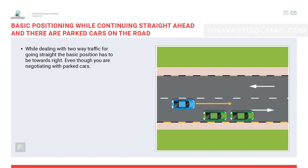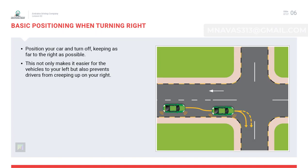Basic positioning when there are parked cars on the road: if there are parked cars on the right side, check the mirrors and blind spots, turn on the left indicator, and overtake if there are no oncoming vehicles. Once you have overtaken, move back to the right side of the road to maintain the basic position.